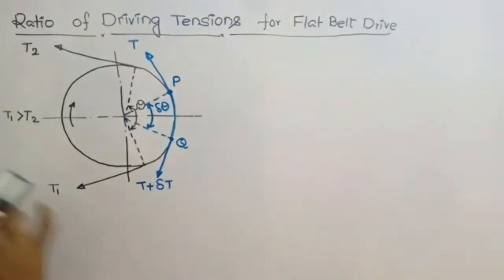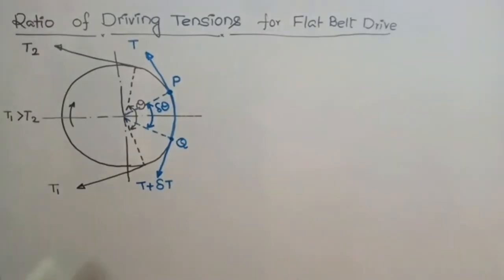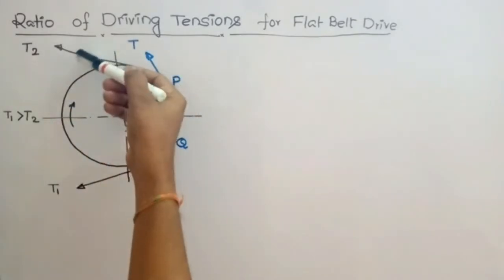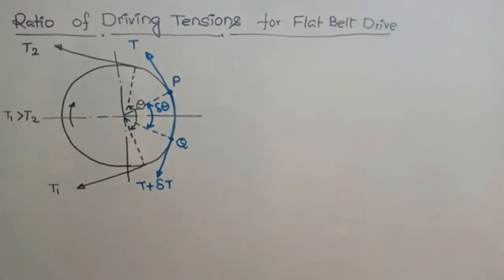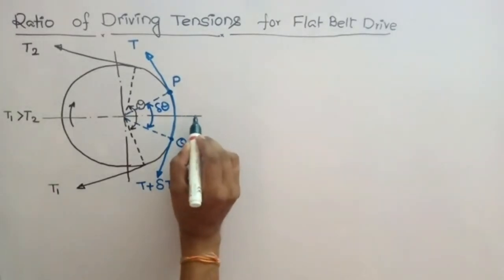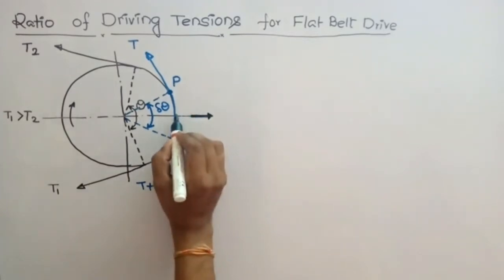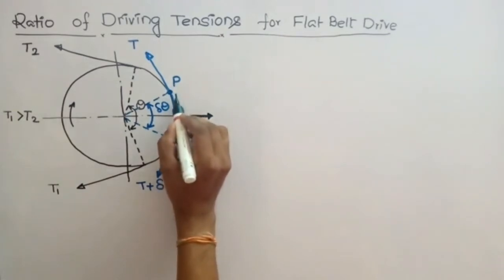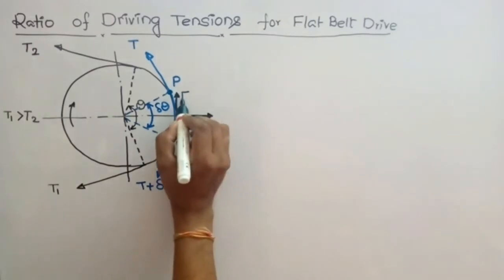The belt is wrapping around this pulley. When the belt moves around this pulley, power transmission takes place. The pulley also rotates due to friction between the belt and the pulley, so there is a frictional grip between them. Let mu be the coefficient of friction. This frictional grip causes a frictional force and the corresponding normal reaction, always perpendicular to the surface.